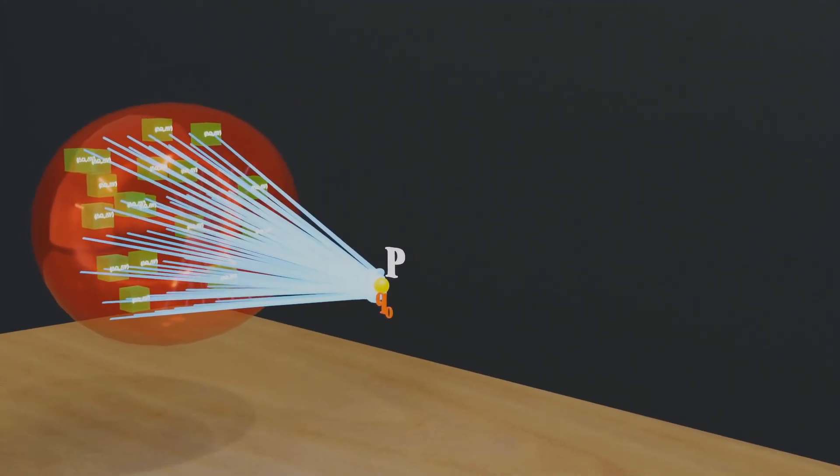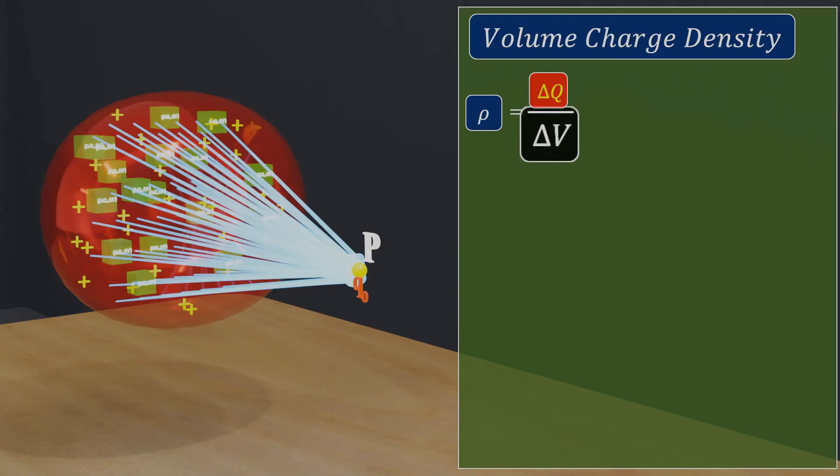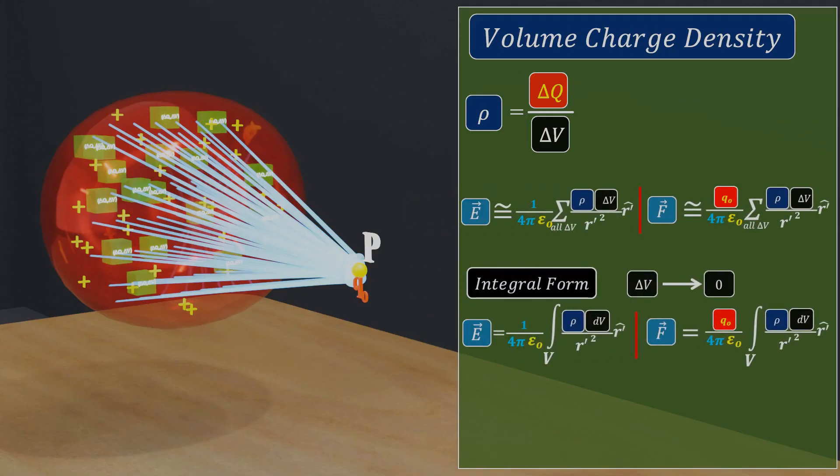Similarly, if we are given volume charge distribution, we will use rho to denote volume charge density, which will be equal to del Q by del V, indicating how much charge is present per unit volume. Now, in the similar way, we will use small volume element del V and their associated charge del Q to calculate the resulting electric field at point P using the superposition principle, just as we did for the surface charge and line charge. Also we can derive similar equations for volume charge distribution in summation and integral form as well. Essentially, Coulomb's law and the superposition principle allow us to calculate the electric field intensity at any point due to linear, surface, or volume charge distribution.